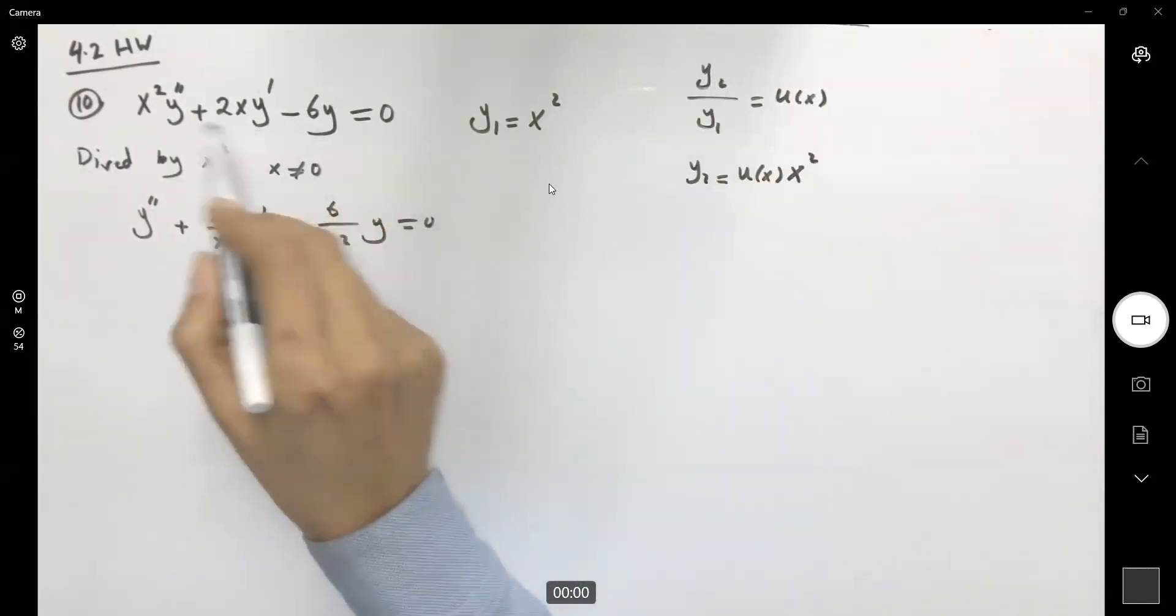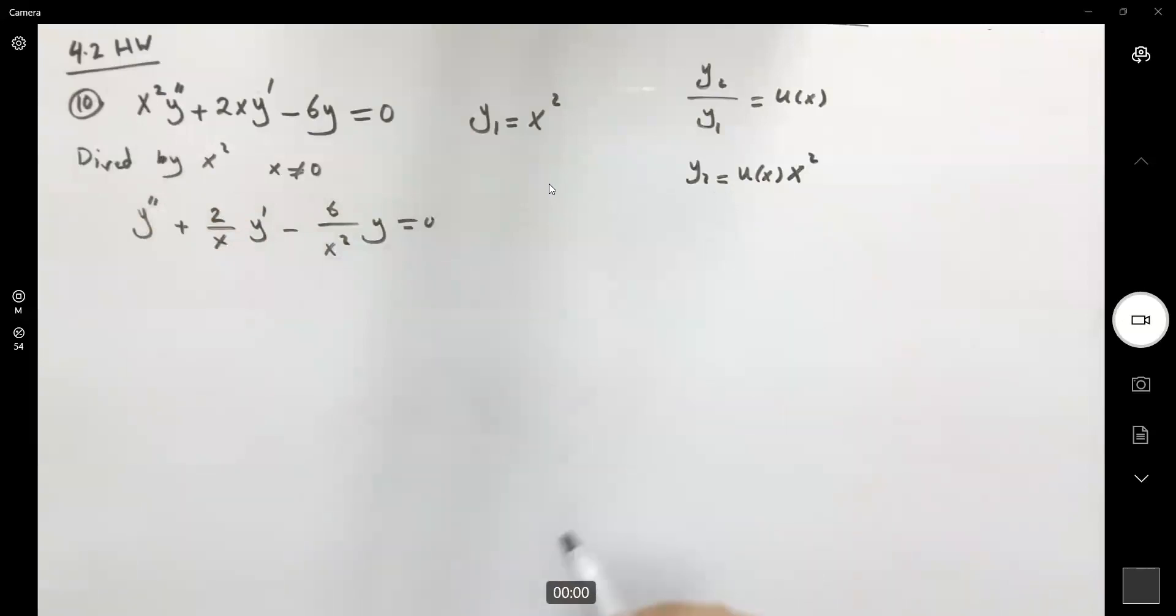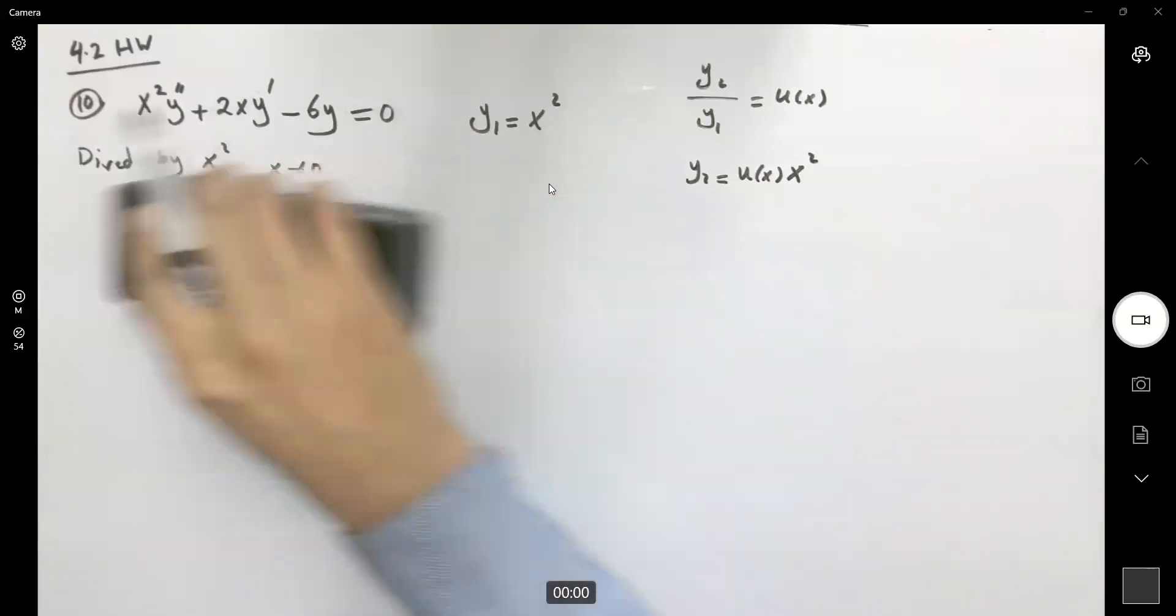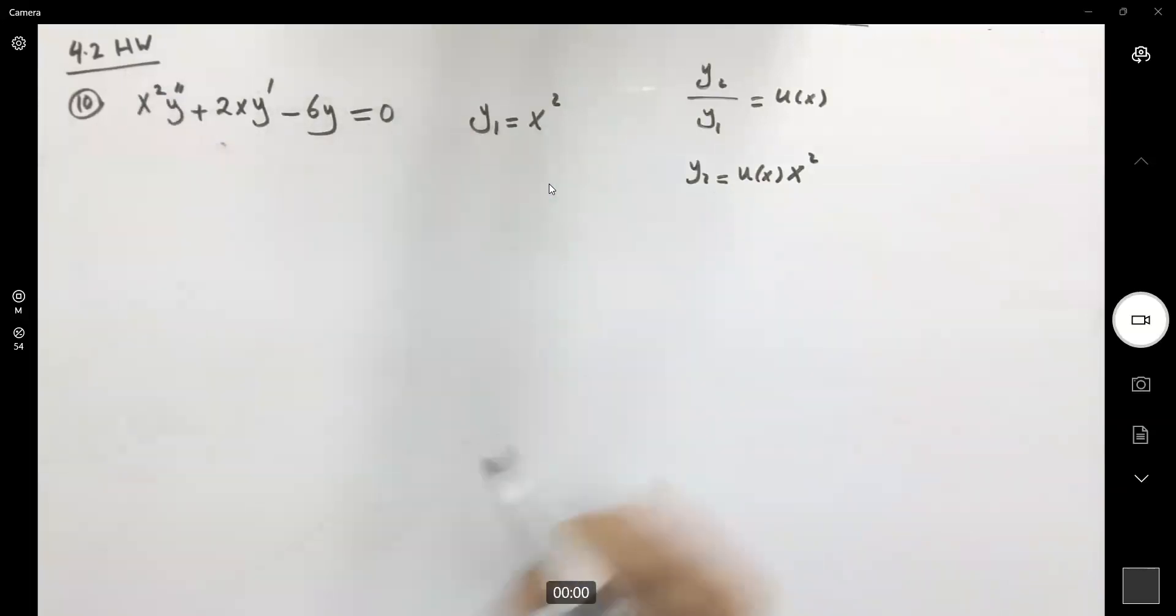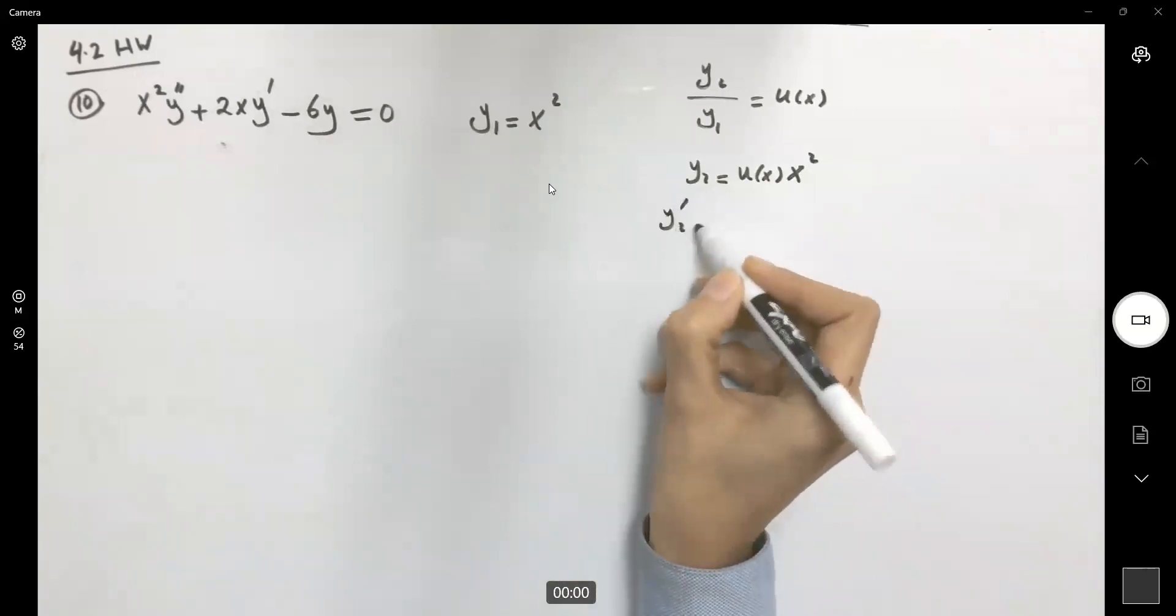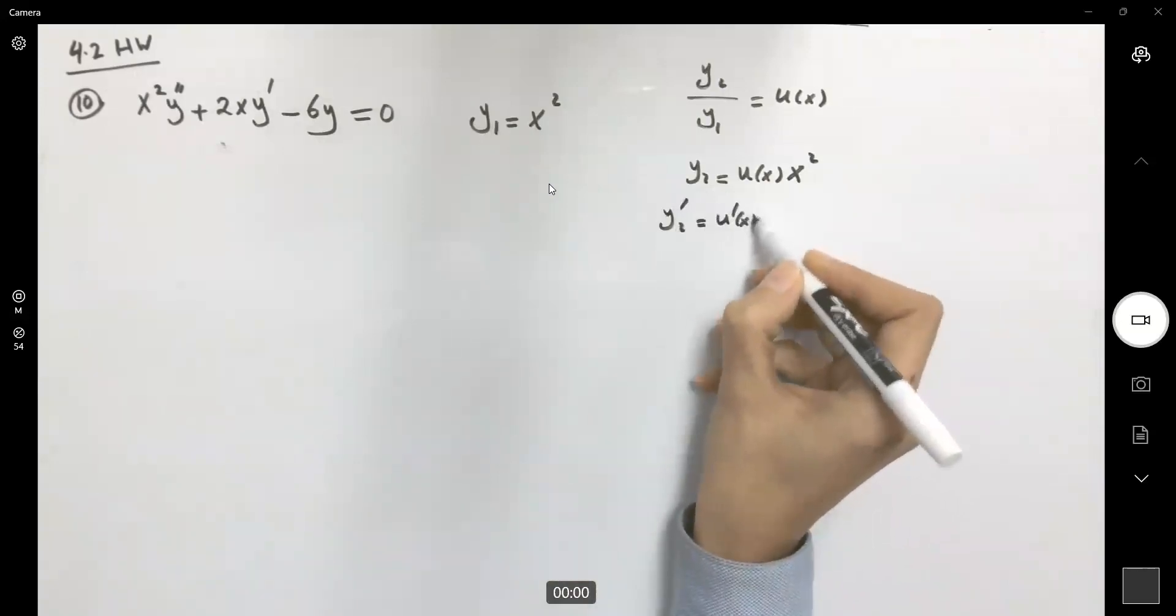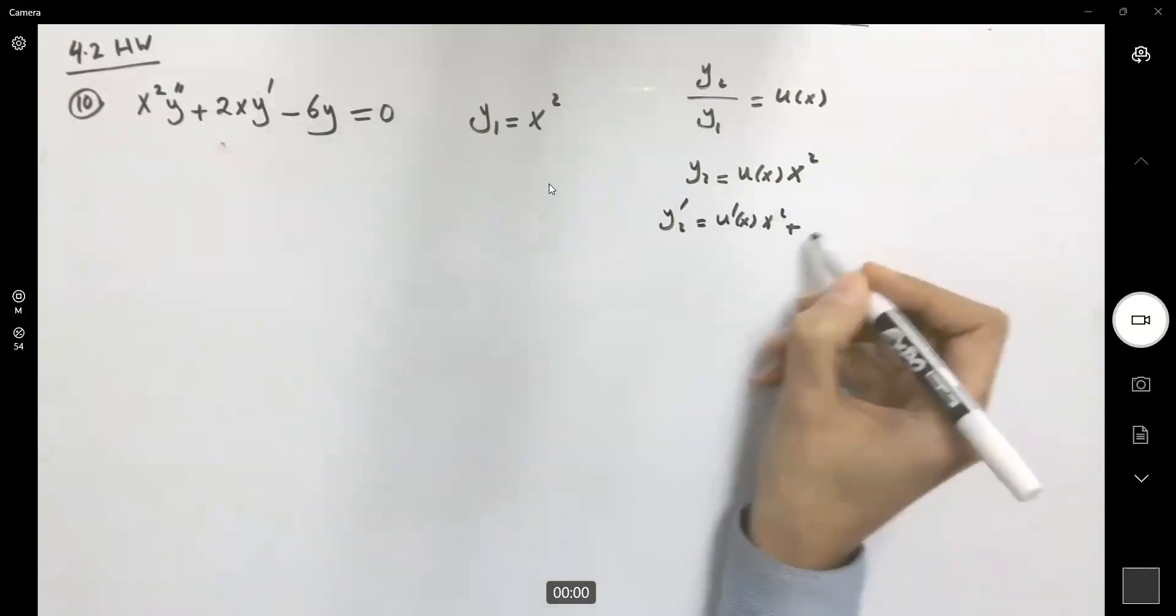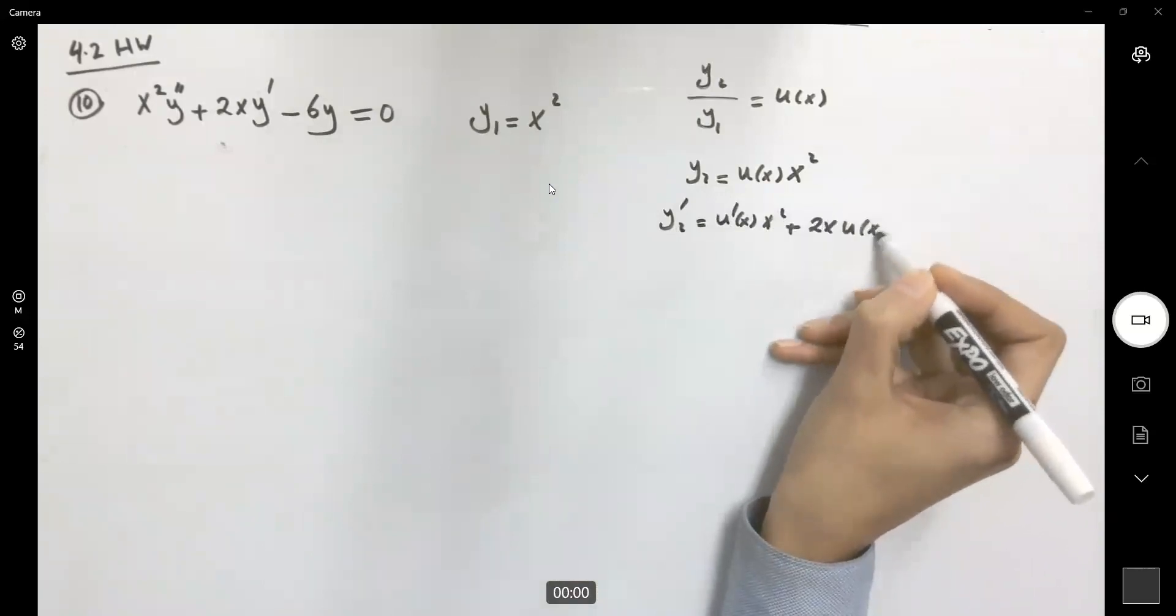So we need the first derivative and second derivative of this function. So the first derivative becomes u prime x squared plus 2x u of x.